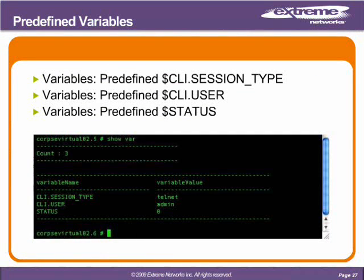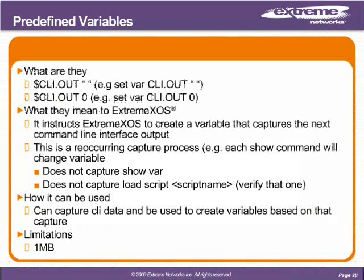The predefined variables - here's a screen capture of what they are and what you should expect them to look like. CLI session type will tell you whether it's Telnet or SSH, or CLI user. This one's currently admin, and the status of the last command executed is zero, which means it worked. The status of the last command is where you'll want to start reviewing if you want to add error checking into your scripts. We're going to review CLI.out in a little bit more detail because of the power and the usability of this system variable.